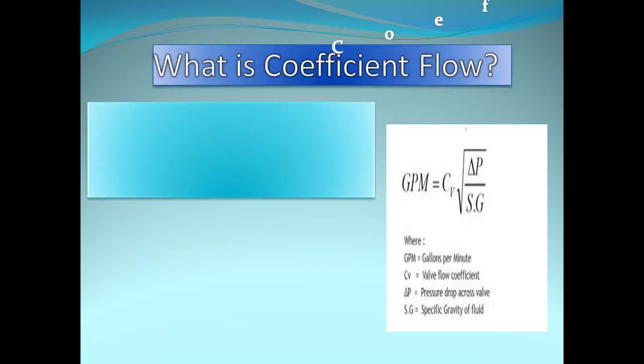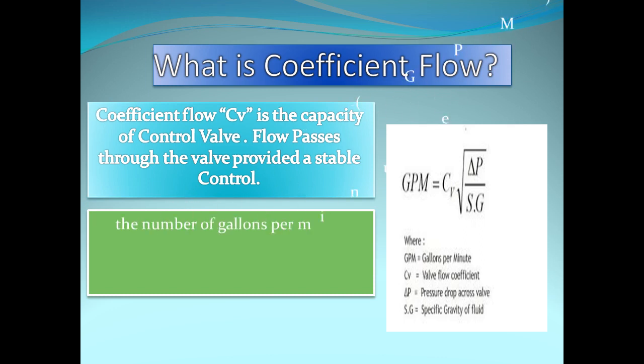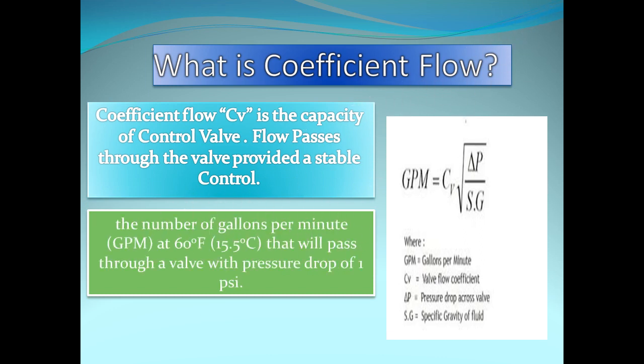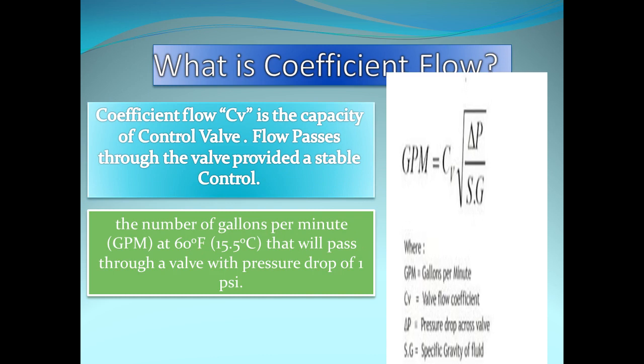What is Coefficient Flow? Coefficient flow or CV is the capacity of control valve. Flow passes through the valve provided a stable control. The number of US gallons per minute at 60 degrees Fahrenheit that will pass through a valve with pressure drop of 1 psi. Here we have a formula. Gallons per minute equals CV, coefficient of valve, under delta P divided by specific gravity.